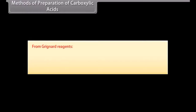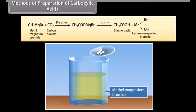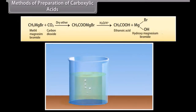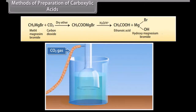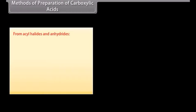From Grignard reagents: Grignard reagents, when treated with carbon dioxide in the presence of dry ether, form salts of carboxylic acids, which in turn give carboxylic acids after acidification. Methyl magnesium bromide reacts with carbon dioxide in the presence of dry ether, forming the salt of carboxylic acid, which gives ethanoic acid and hydroxymagnesium bromide after acidification. From acyl halides and anhydrides.